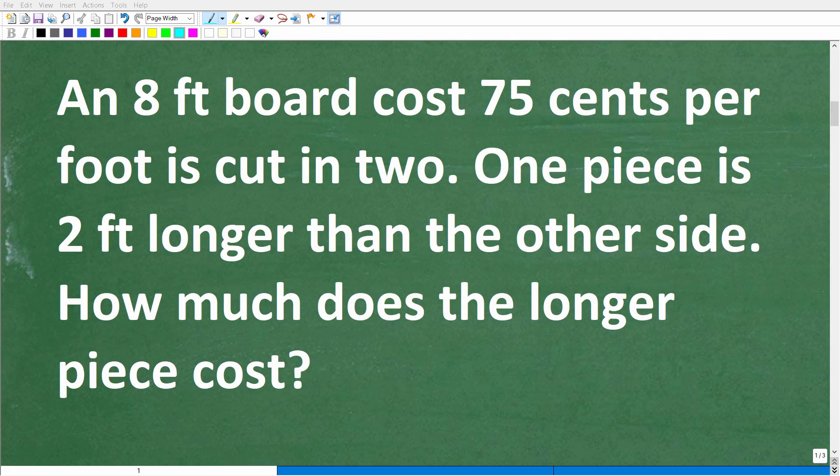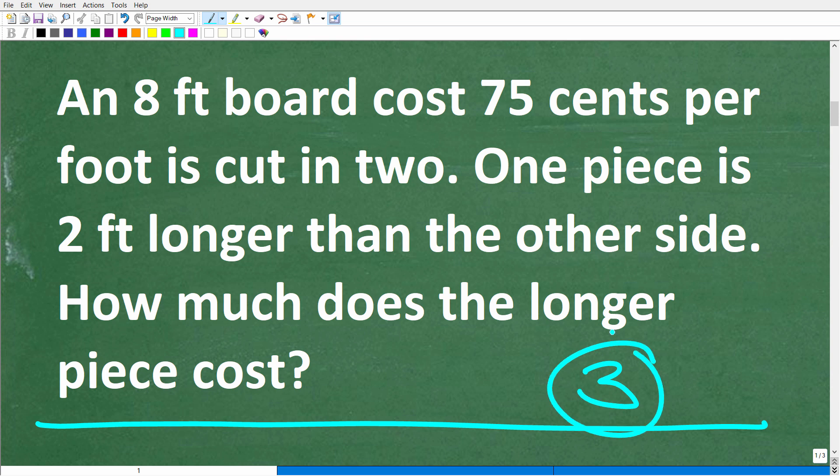So the first step that you always want to take when you're trying to figure out a math word problem is to read it at least three times. Because if you just read a problem one time, that's simply not enough to absorb all the information and to make sure you understand the question. So read it at least three times, and then you want to try to model or visualize or represent the information in the problem.